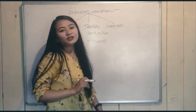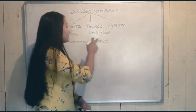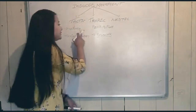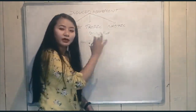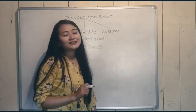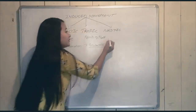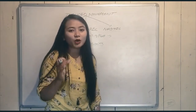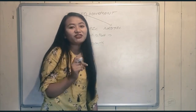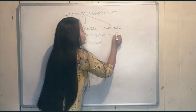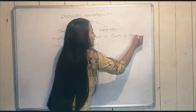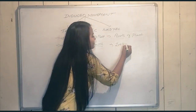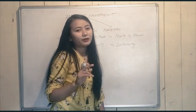Next is nastic movement. Unlike the other two, nastic movement depends upon the intensity of the external stimuli — not the direction. It is a curvature of parts of a plant body in response to the intensity of external stimuli.